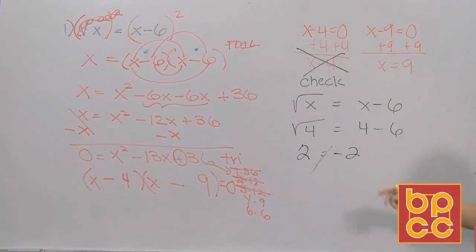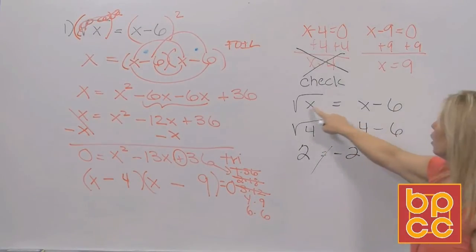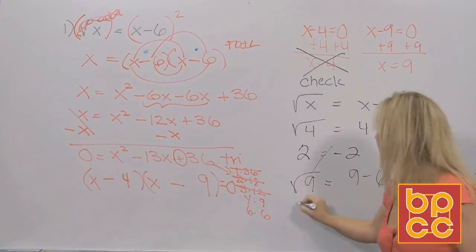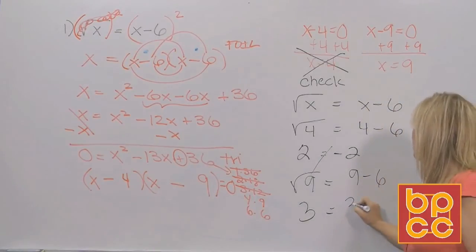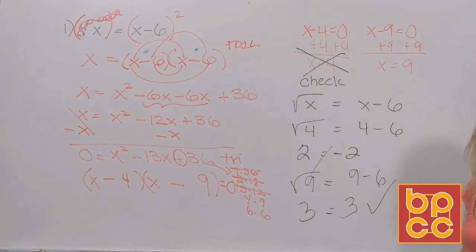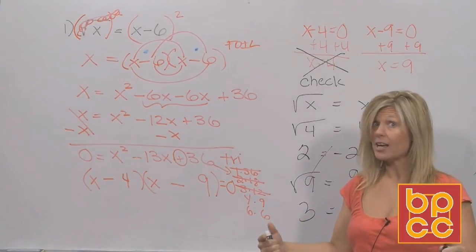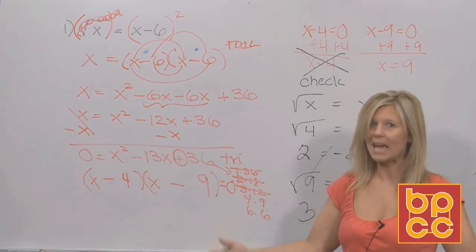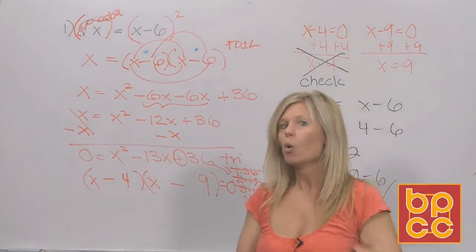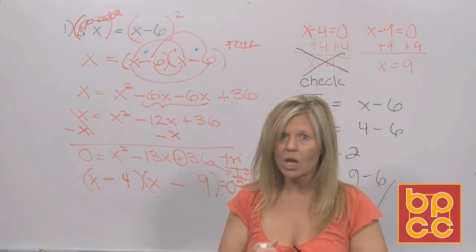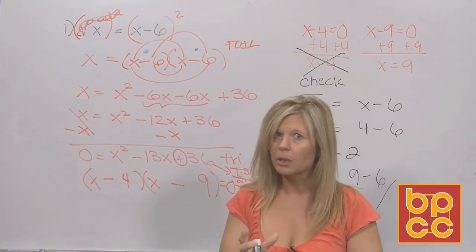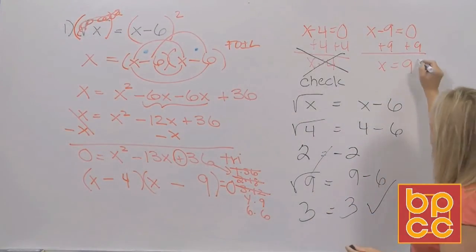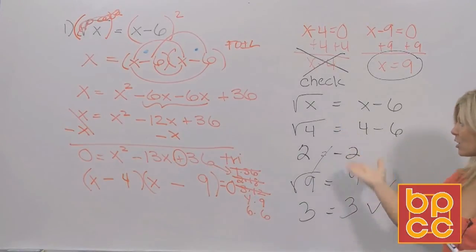Now check x equals 9. Go back to the original equation and replace x with 9: square root of 9 equals 9 minus 6. The square root of 9 is 3, and 9 minus 6 is 3. Does 3 equal 3? Yes — that checks. So the only solution here is x equals 9. Just because you solve and get solutions doesn't guarantee they're always the answer. You have to do checks on certain equations.